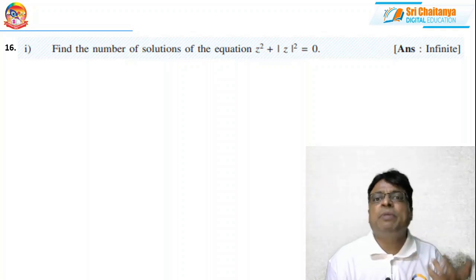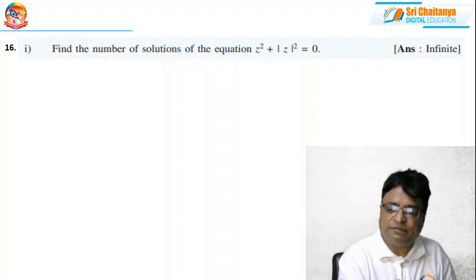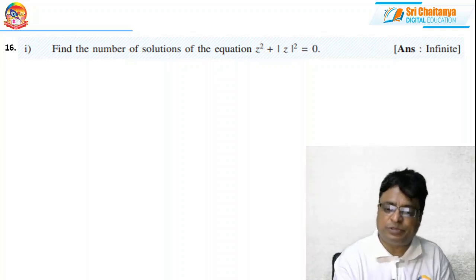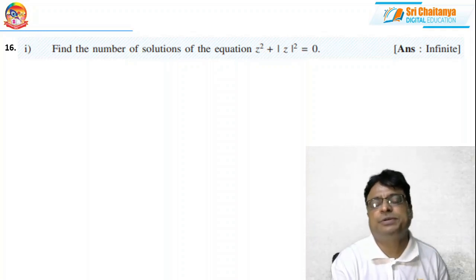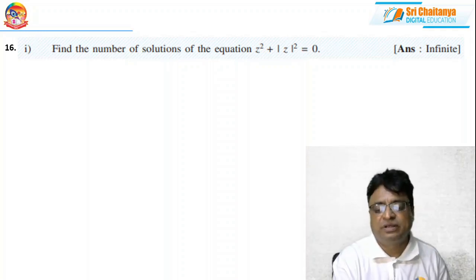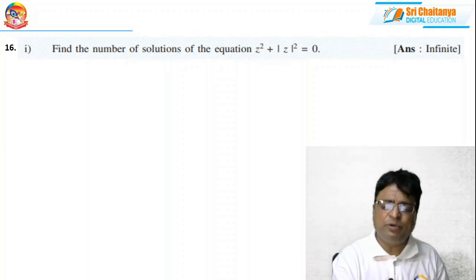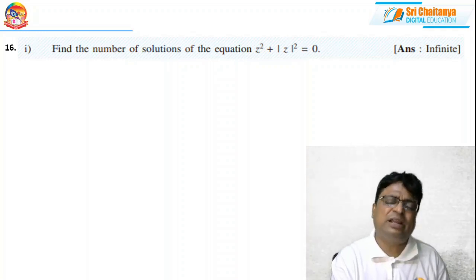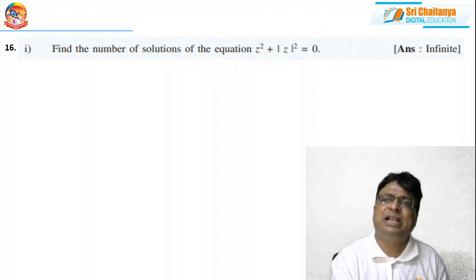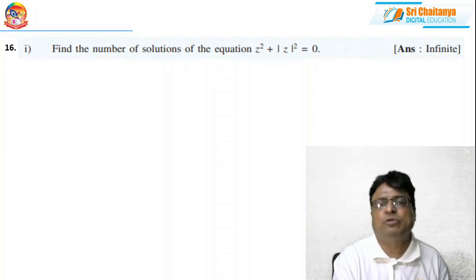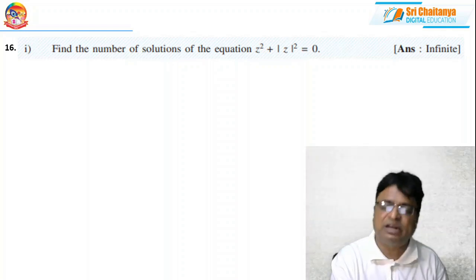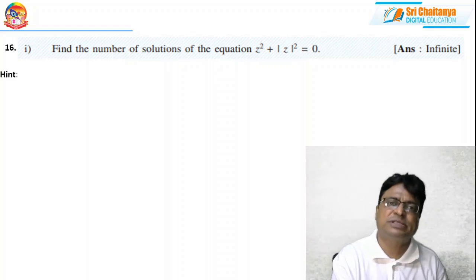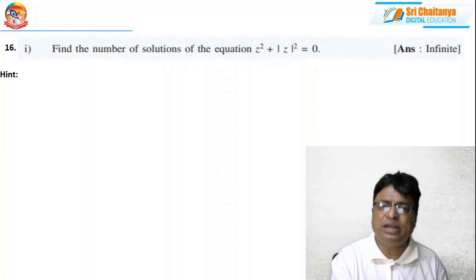Find the number of solutions of z² + |z|² = 0. Here what I am doing is taking z as x + iy, substituting it, and equating both the real and imaginary parts. There I will get the solutions. It requires some patience. The hint is: take z = x + iy.